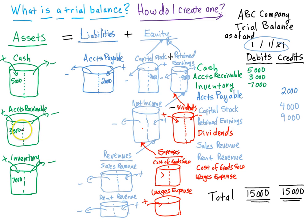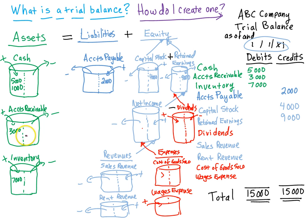Let's start the period with a few transactions. First, one of the customers paid $1,000. If they paid us $1,000, we would receive cash of $1,000 — so cash goes up — and our receivables from that customer would go down by $1,000. Assets remain the same because they went up by $1,000 and went down by $1,000.